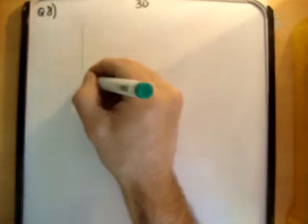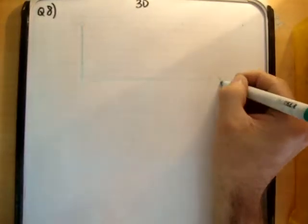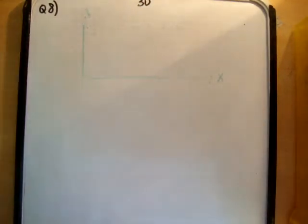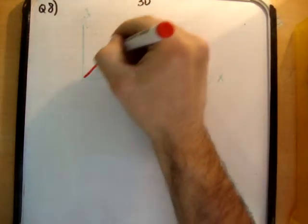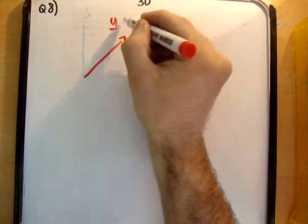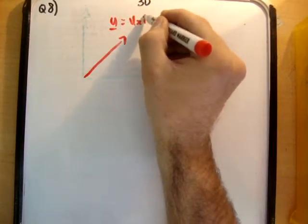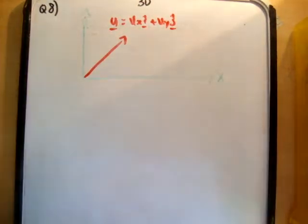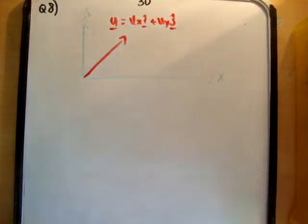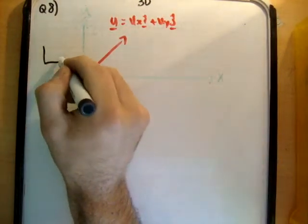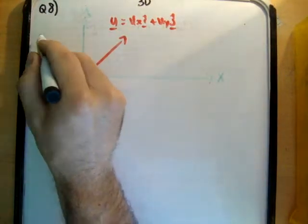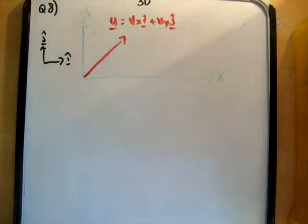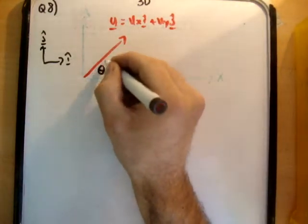So we draw x and y axes making our Cartesian plane. We draw our initial velocity vector u which is equal to u sub x i hat plus u sub y j hat. We draw our unit vectors. This time I'm going to go with these unit vectors here. We draw our angle of projection theta.